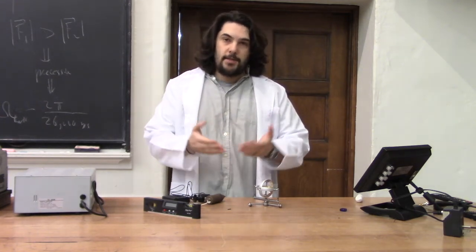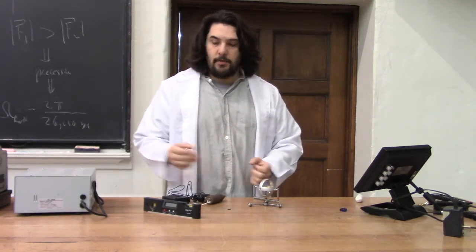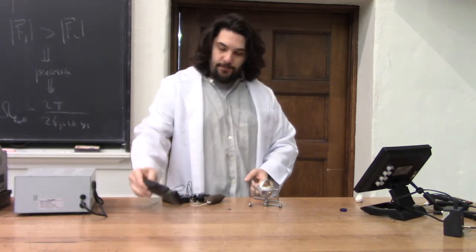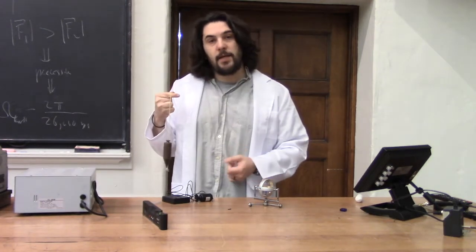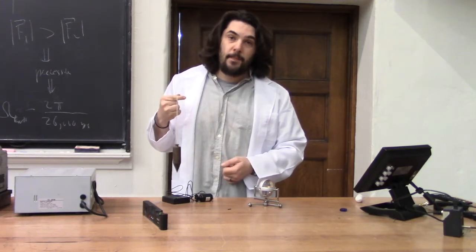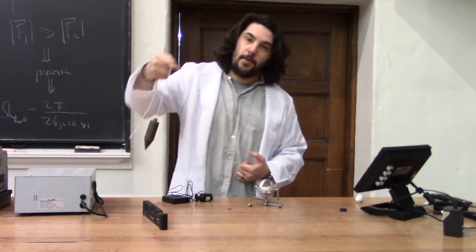When one wants to know their orientation, or which way is down, they might use a level or a plumb bob. These work great if you're in an inertial reference frame, but as soon as you start twisting, turning, or accelerating,